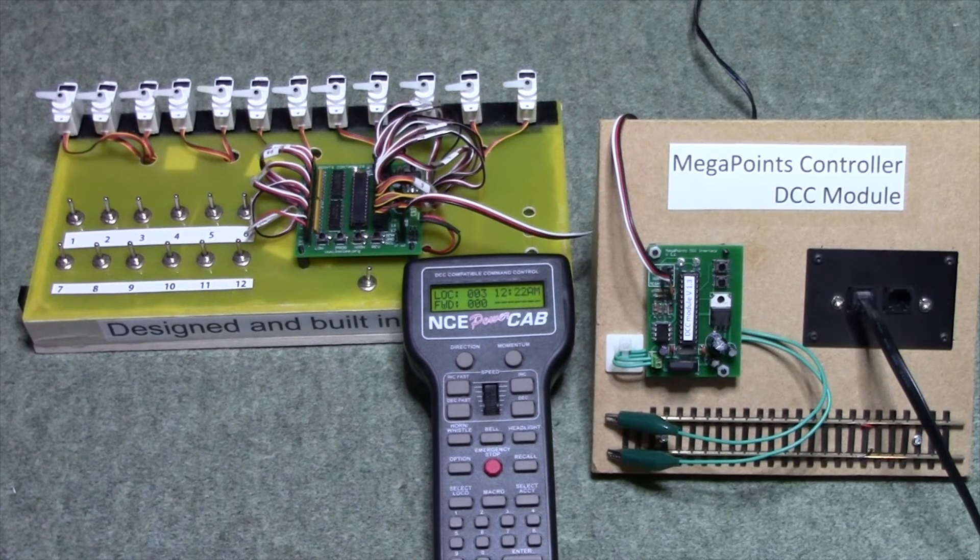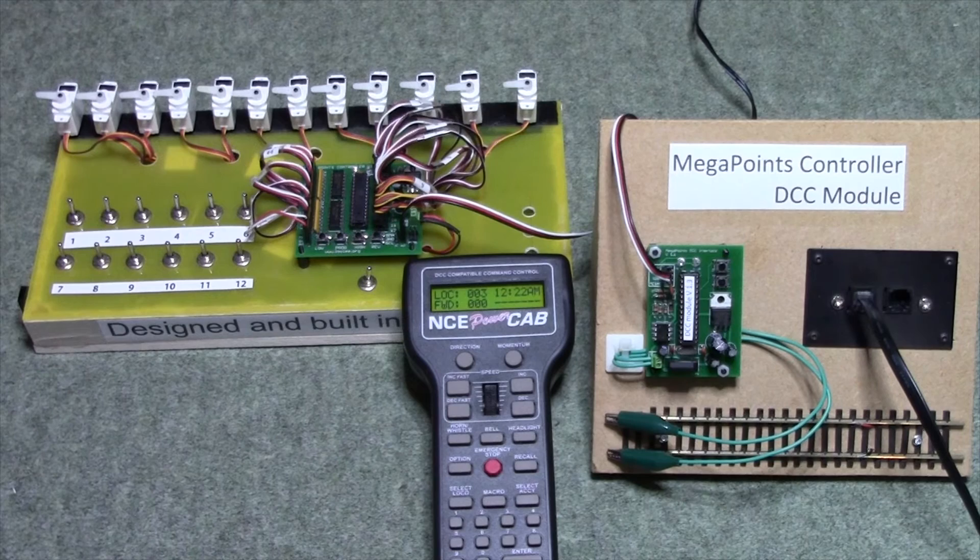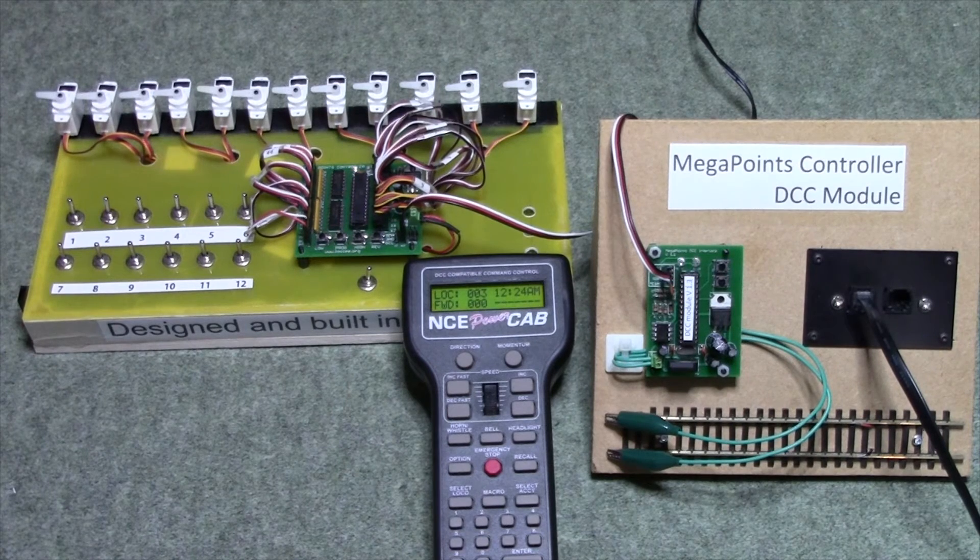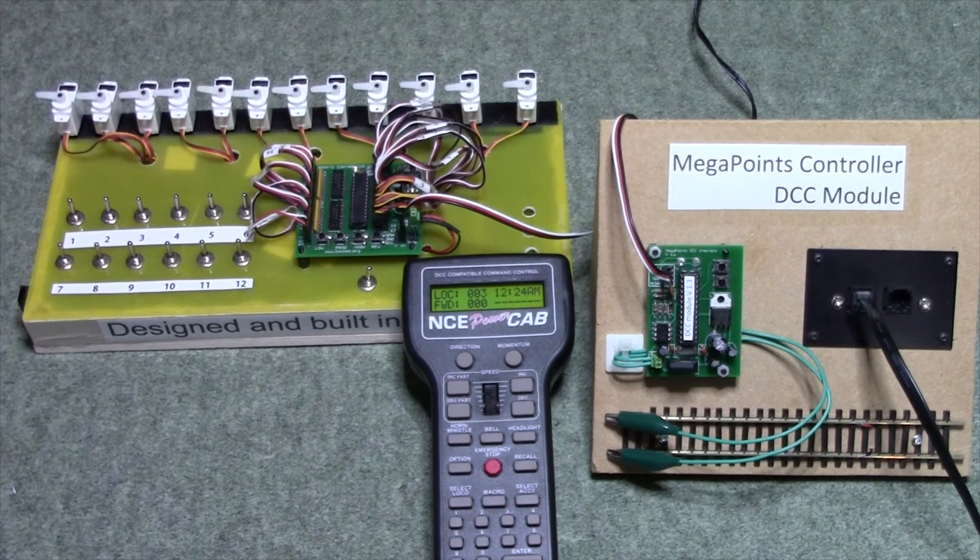The red light has gone out on the DCC module as it's learnt that address. So now the outputs of the Megapoints board will be from address 1 to address 12.